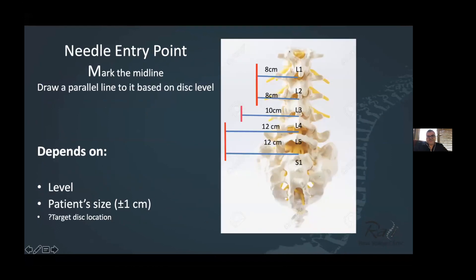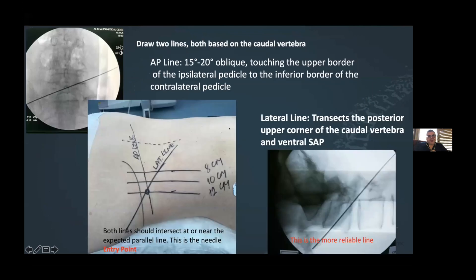First, decide the level. For upper lumbar levels, you are usually 7-8 centimeters from the midline. For L3-L4, you are 10 centimeters from the midline. For L4-L5 and L5-S1, you are between 12 and 13 centimeters. If your patient is obese, add another centimeter; if very thin, subtract one centimeter. But the target dislocation doesn't really matter much, because the approach to most disc herniations is exactly the same. For L4-L5, I mark the midline and put a line at 12 centimeters.